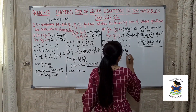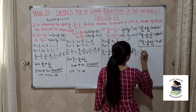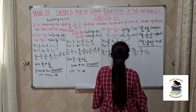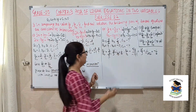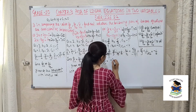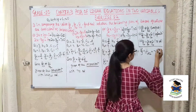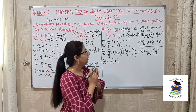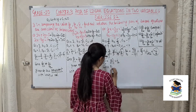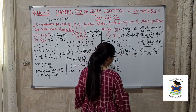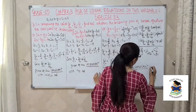b1/b2 is (5/3) divided by (−10), which gives (5/3) × (1/(−10)) = −1/6. And c1/c2 is (−7)/(−14) = 1/2. Now we see that a1/a2 is 1/6 and b1/b2 is −1/6, so they are not equal. Therefore these lines will have a unique solution and the equations are consistent. Since a1/a2 is not equal to b1/b2, therefore the equations are consistent with unique solution.